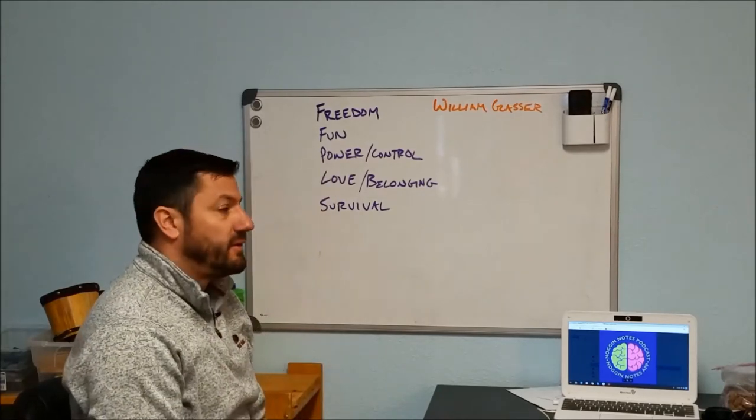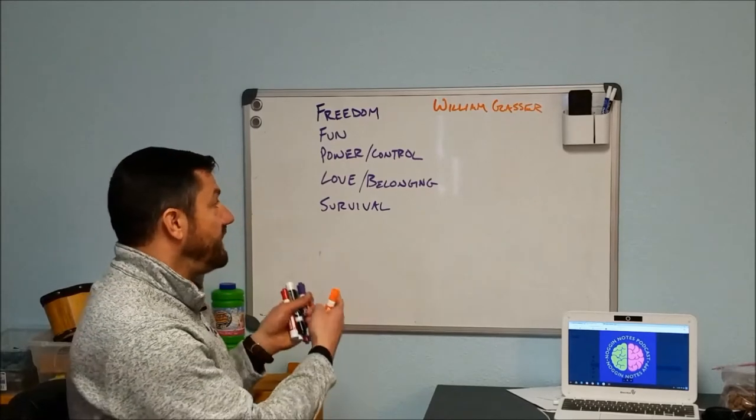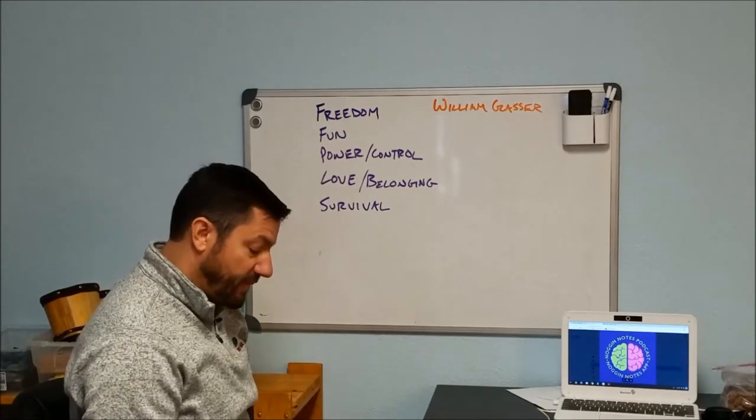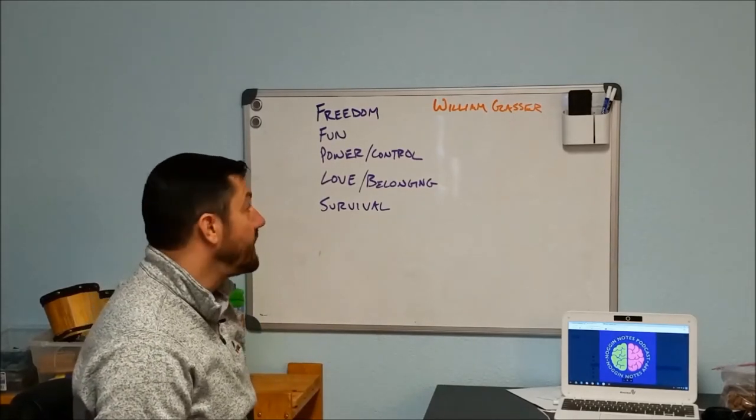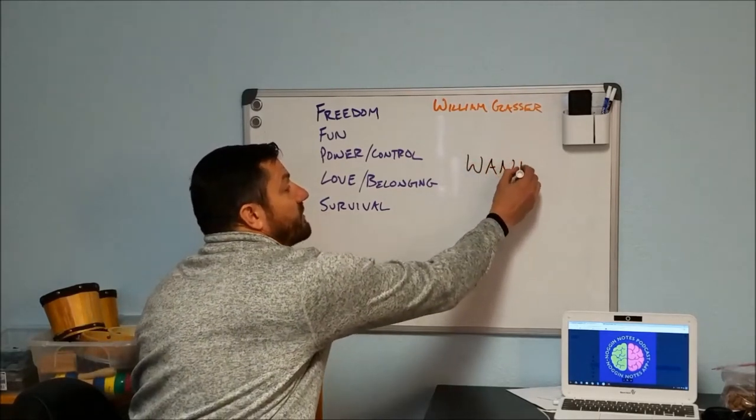And then freedom can be expressed as simply the power to choose all the way up to exercising that choice or that freedom and being autonomous in doing so. I'm going to go through a couple of examples here and we're going to illustrate how anything we do is set to meet one or more of these basic needs.